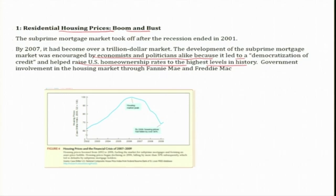From an equity and fairness perspective, everyone supported lending to subprime borrowers as well. Under normal market conditions, many people would not be eligible for loans due to high default risk and insufficient collateral. But because of the increase in liquidity in the market after 2001, there was overall support for increasing housing ownership, and even government involvement through Fannie Mae and Freddie Mac.